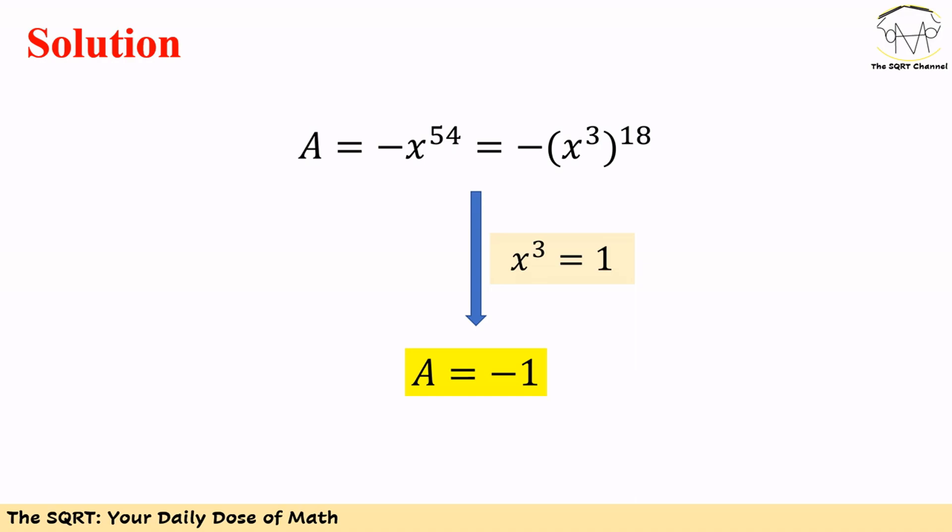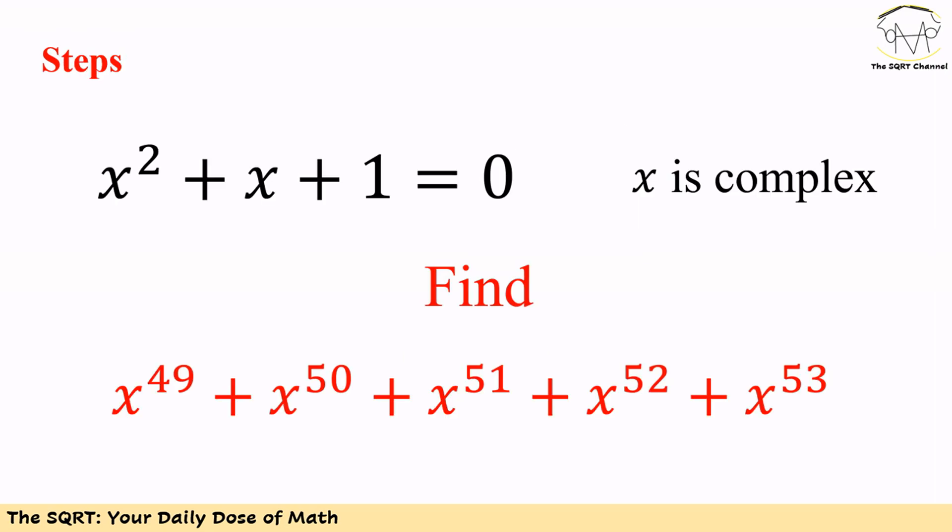The whole expression we need to evaluate is -x^54. Since 54 = 3 × 18, we write it as -(x³)^18. Replacing x³ with 1, the final expression becomes -(1)^18 = -1. That's our answer.